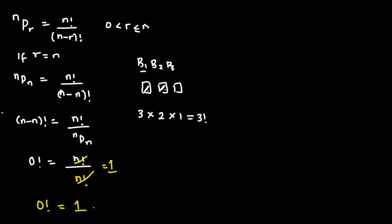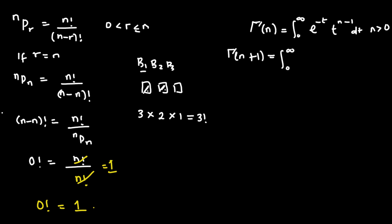Another way we can do this is to use the concept of the gamma function. The gamma function of n is defined as the integral from 0 to infinity of e raised to the power of minus t times t raised to the power of n minus 1 dt, where n is strictly greater than 0. We can also define it as: the gamma function of n plus 1 equals the integral of e to the power of minus t times t to the power of n dt, where n is strictly greater than minus 1. And the gamma function of n plus 1 is the same thing as n factorial.